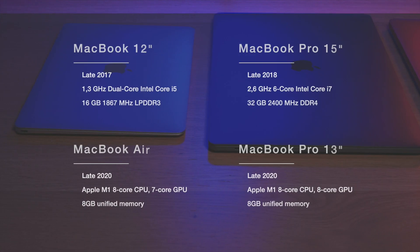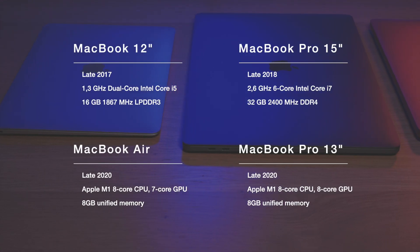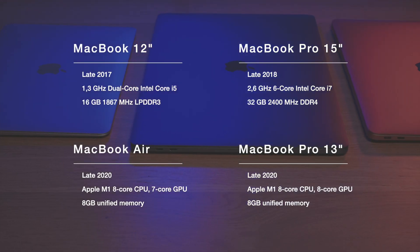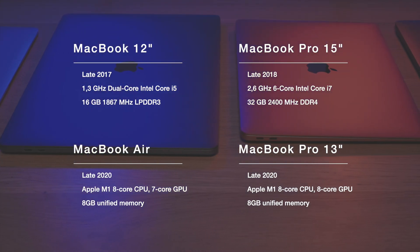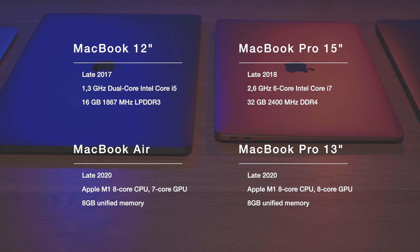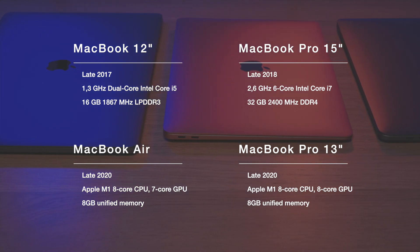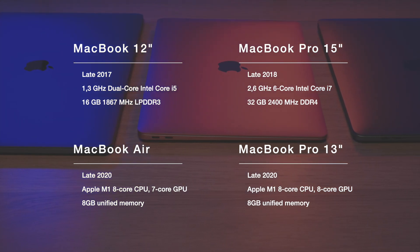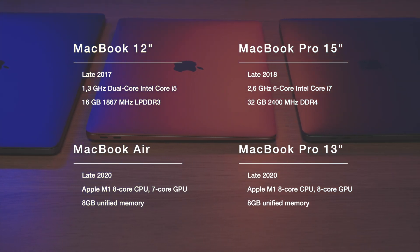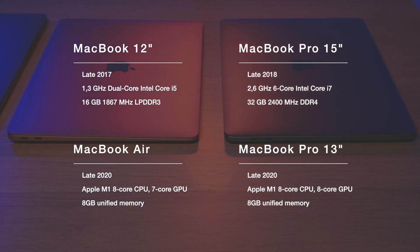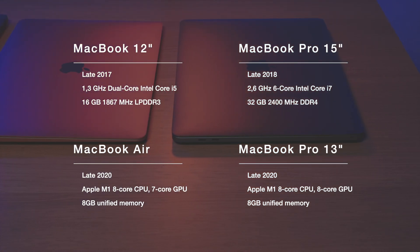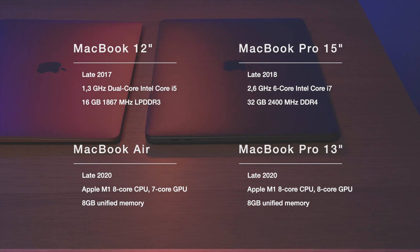We'll be comparing four devices: MacBook 12 inch with i5 CPU and 16 gigabytes of RAM, MacBook Pro 15 inch with i7 CPU and 32 gigabytes of RAM, the MacBook Air with the new M1 chip and 8 gigabytes of RAM, and MacBook Pro 13 inch with M1 chip and 8 gigabytes of RAM.